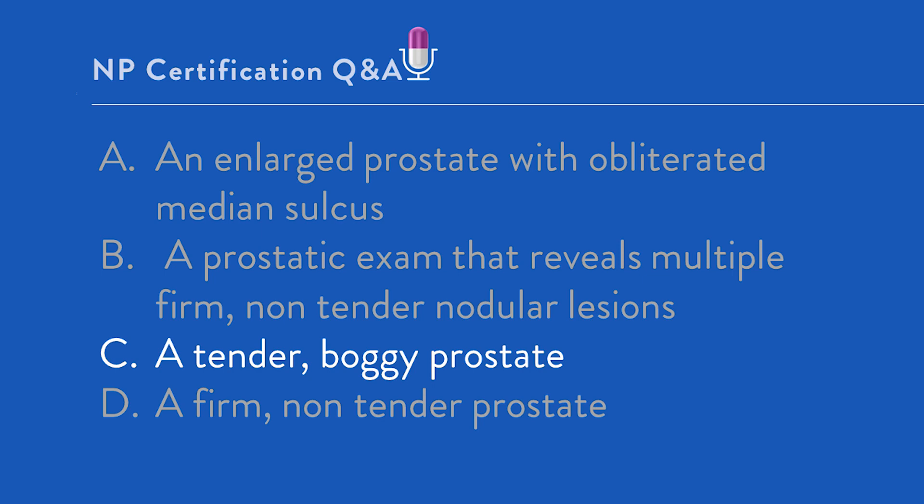Regardless of the causative organism, the clinical presentation of bacterial prostatitis is similar. In acute bacterial prostatitis, the person presents acutely ill with fever, chills, malaise, and arthralgia, as he reports. Irritated voiding symptoms, suprapubic and perineal pain are often reported. Sometimes what the man with bacterial prostatitis will tell you is, 'my bottom always aches' — and that would be the perineum.